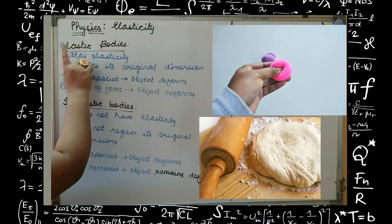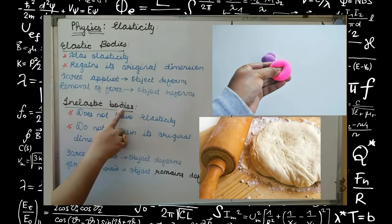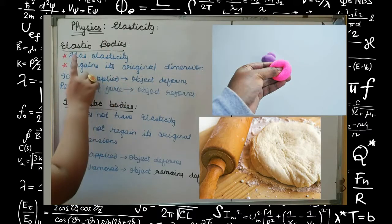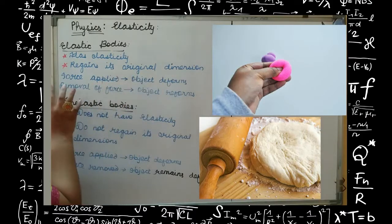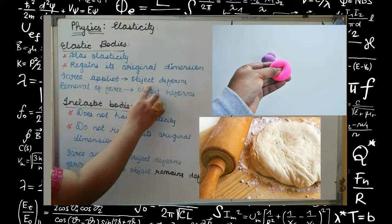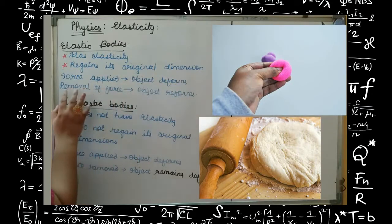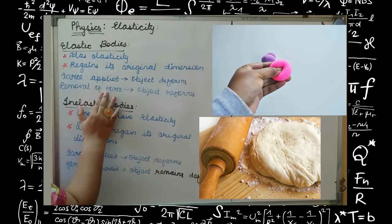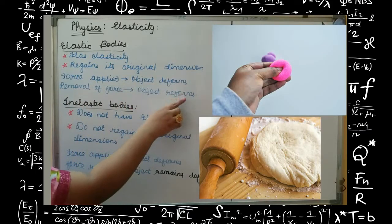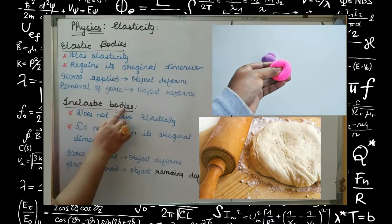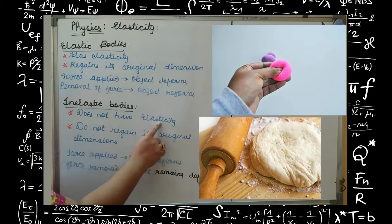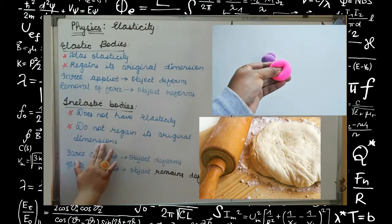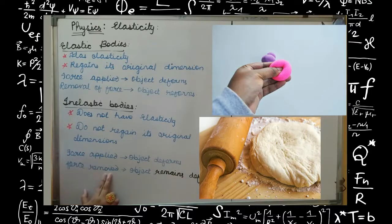There are two types of bodies: elastic bodies and inelastic bodies. Elastic bodies are the type of bodies which have elasticity in them and can regain their original dimension — when force is applied the object deforms, but upon removal of external force the object reforms. In inelastic bodies, they do not have elasticity, so they don't regain their original dimension. When the force is applied the object deforms, but when the force is removed the object remains in its deformed condition.